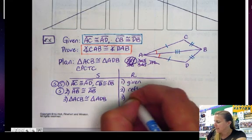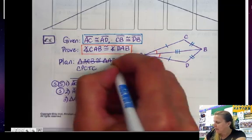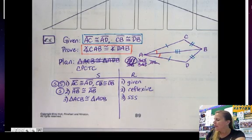Which means now I can say that the triangles are congruent. So triangle ACB congruent to triangle ADB, and my reason is side-side-side.